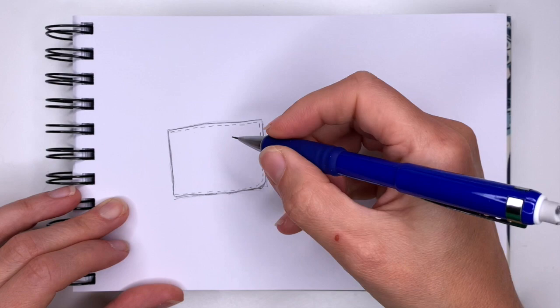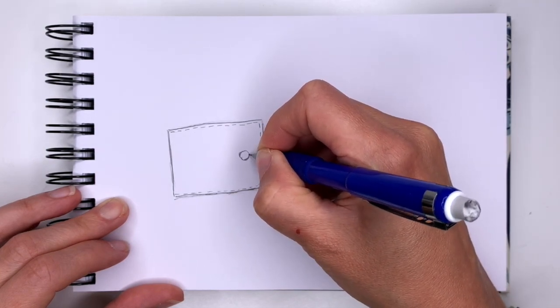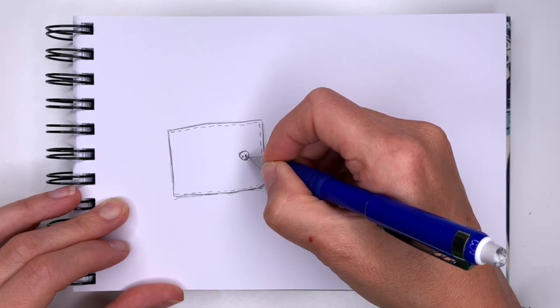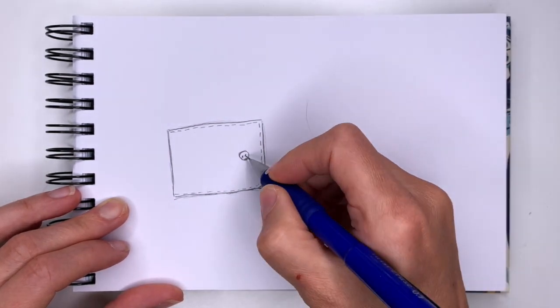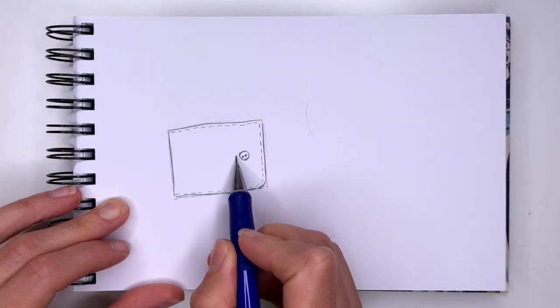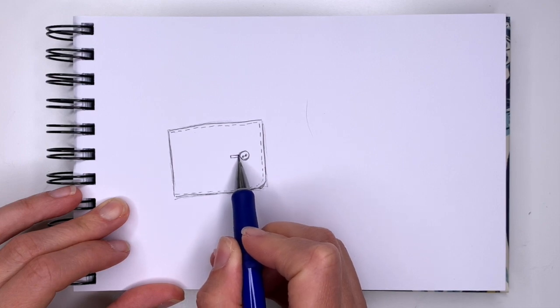We're going to add a button. So the button will be a circle. And two dots for the holes in the button and you can do a thin line that connects them. And then here we're going to see a piece of a button hole.